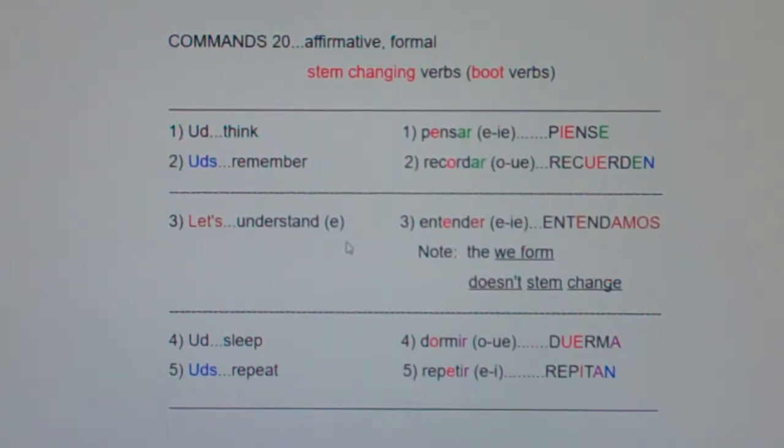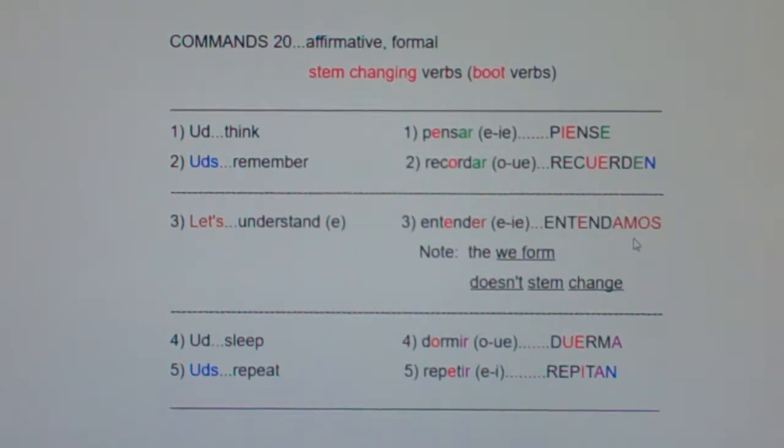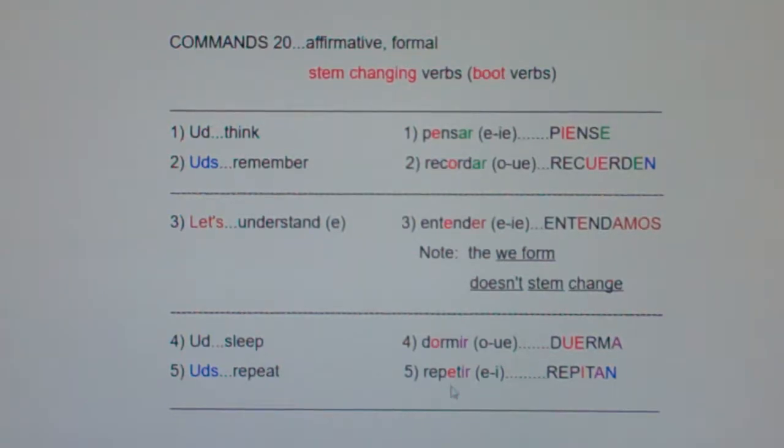Now, if it's we or let's, let's eat, let's drink, let's study, it's AMOS. In the present tense, AMOS means we, and in the command form, AMOS means we. Now, notice down here, some people have trouble with repitan. It's a boot verb. And in the stem, this R-E-P-E-T, there are two E's. Everything except the IR is called the stem. If there are two E's in the stem, it's always the second E that stem changes.